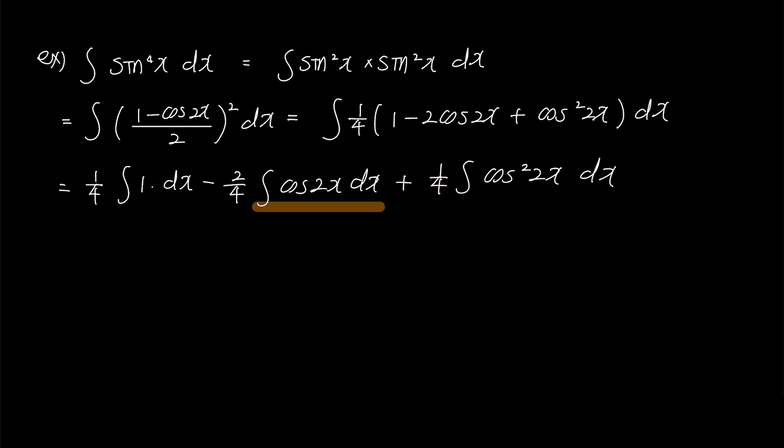Since we have previously determined the integral of cosine 2x dx, we can directly apply that result. The problem now simplifies to 1 over 4x minus half times half sine 2x plus 1 over 4 integral cosine squared 2x dx.